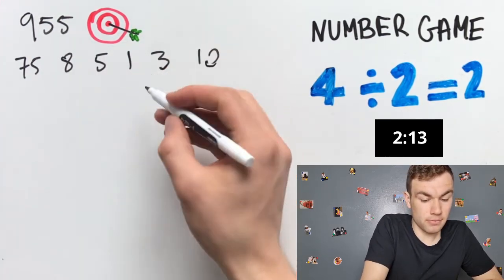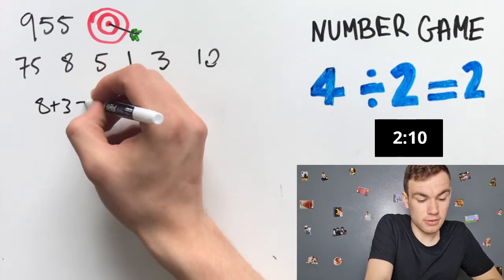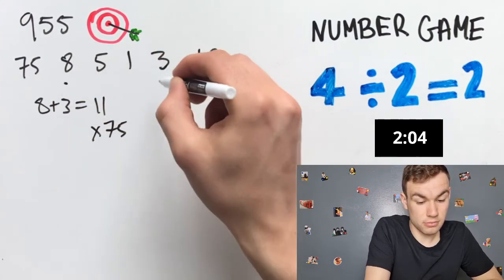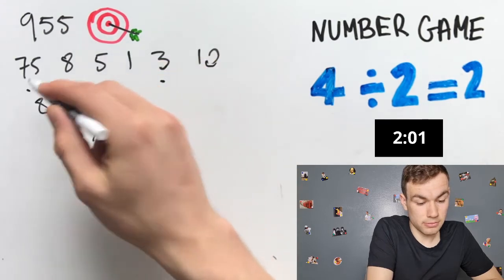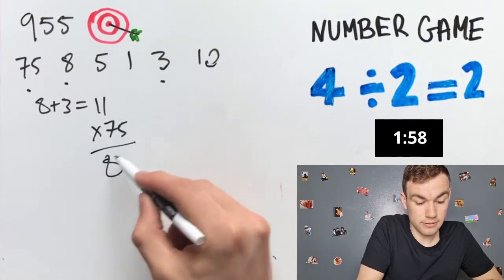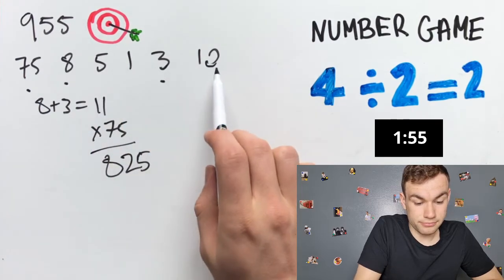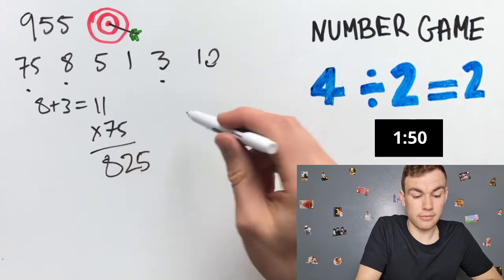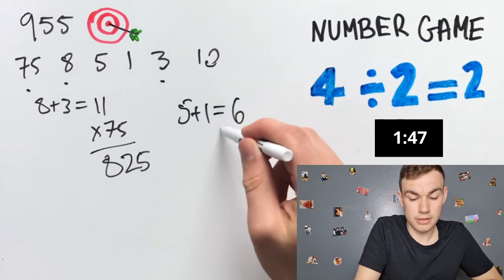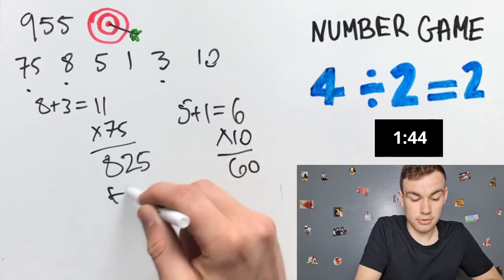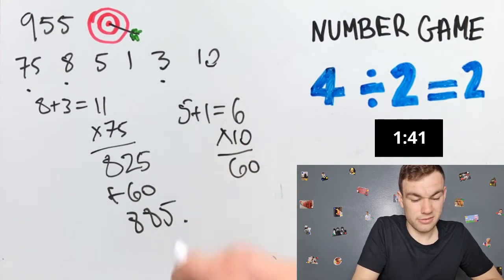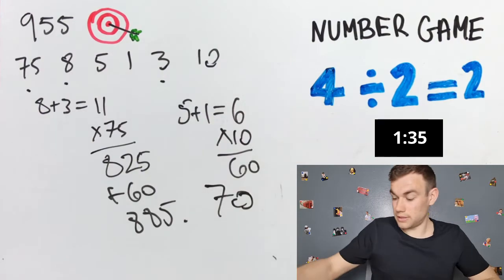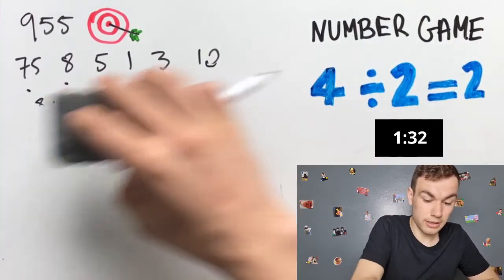Maybe 8 plus 3 is equal to 11 multiplied by 75 is equal to 825. Then 5 plus 1 is equal to 6 multiplied by 10 equal to 60 plus 60, 885. That is 70 away from 955. I will try another way.